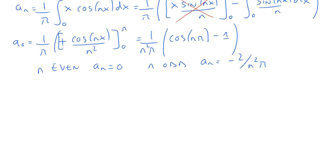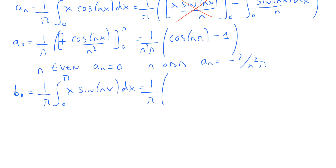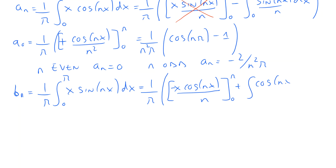Finally we calculate bₙ. bₙ is given by 1 over π. Again, we integrate between 0 and π because the function is 0 between π and 2π. We have the integral of x·sin(nx) dx, which again requires integration by parts. Integrating sin(nx) gives −cos(nx)/n, so the first term is x·(−cos(nx)/n) evaluated from 0 to π. Because of the minus sign from the integral, the remaining term becomes plus the integral of cos(nx)/n between 0 and π.